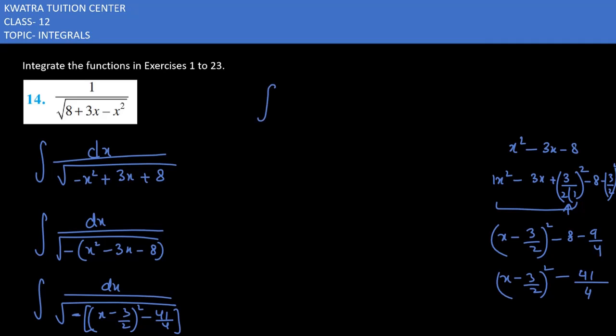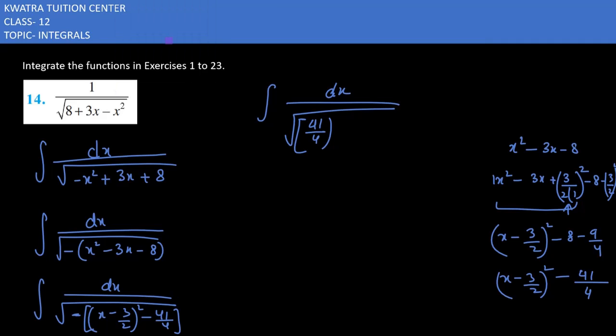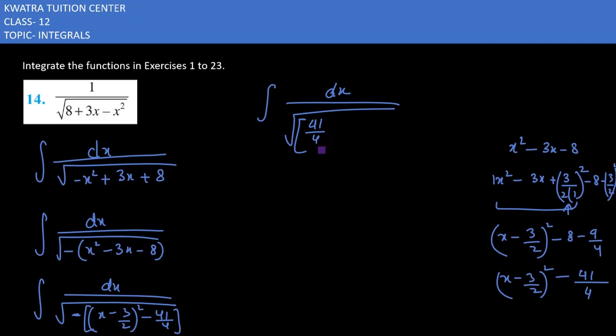Sorry, not whole square—just write 41 over 4 here. Then we have 41 over 4 minus (x minus 3/2) whole squared, with dx in the numerator.